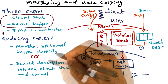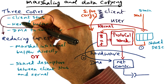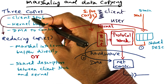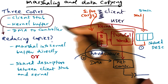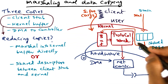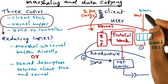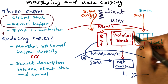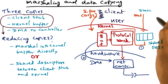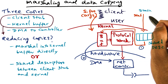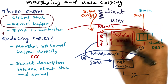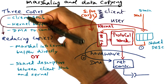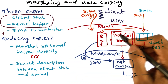That's the second way to reduce the number of copies from two to one. So in both cases — either the first approach of pushing the client stub into the kernel, or the second approach of having a shared descriptor between the user stub living in user space and the kernel to describe the layout of the data structures assembled into a network packet — both of these allow us to reduce the number of copies from three down to two.